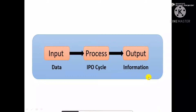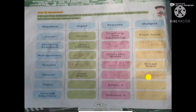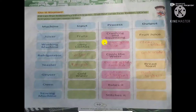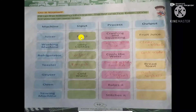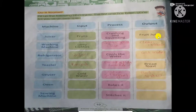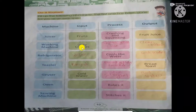Now let's do the exercise given on page number 10. You can understand input, process, and output better by doing this exercise. For juicer: input is fruits, process is crushing and squeezing, output is fruit juice. For washing machine: input is dirty clothes, process is clothes getting clean, output is clean clothes.